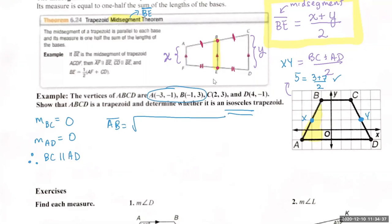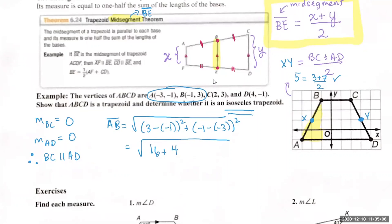For AB, we do (3 minus negative 1) squared plus (negative 1 minus negative 3) squared. That's 4 squared plus 2 squared — 16 plus 4 — which is the square root of 20. Simplifying: 20 factors as 4 and 5. The square root of 4 is 2, so the answer is 2 square root of 5.